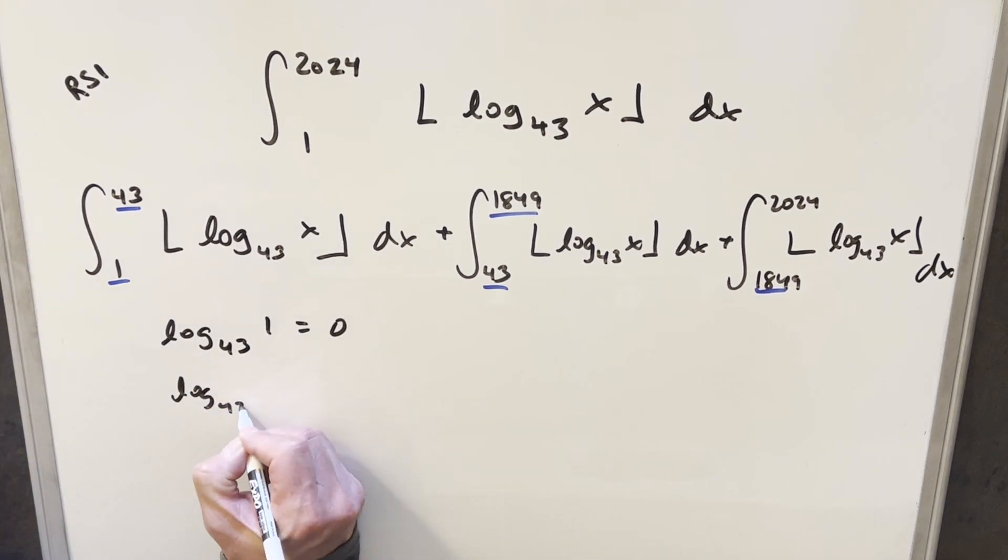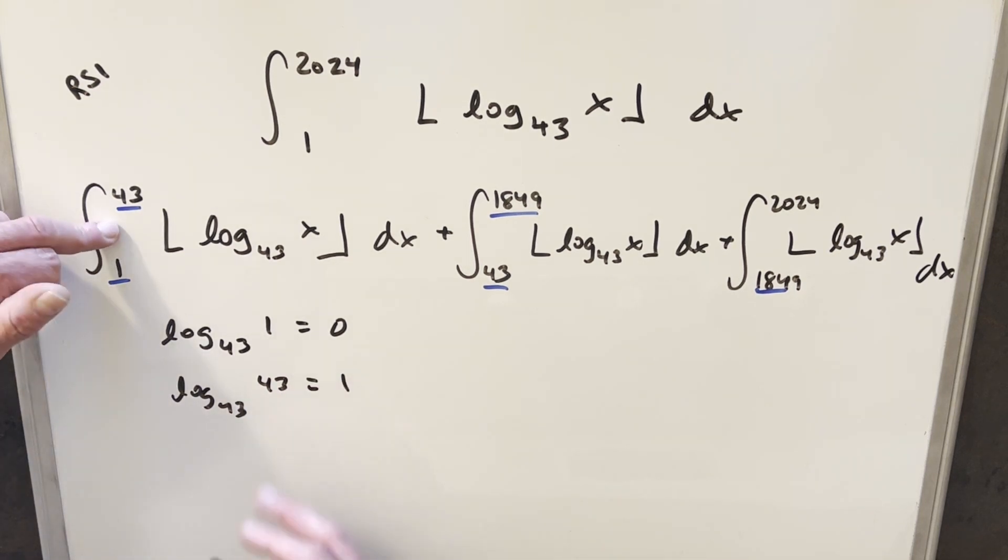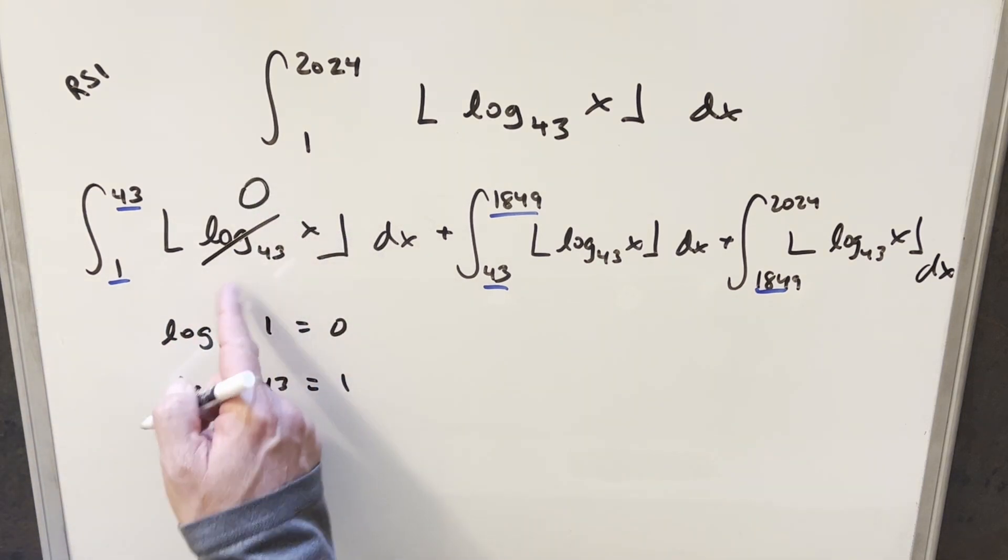For this one, log 43 of 43 is just 1. So all the way at the upper bound, this value is 1. But for an integral, we never quite get to 43. We want to look at values just below that. And so all the values between 1 and 43, everything here is going to round down to 0. So because here we're just integrating 0, this first integral is just going to go away.